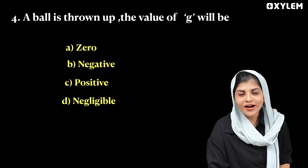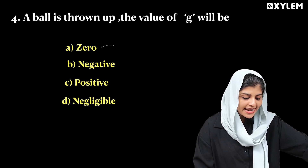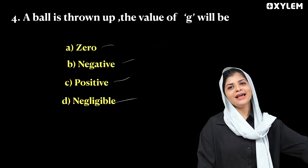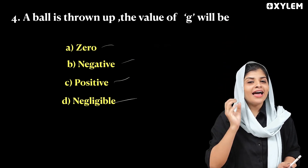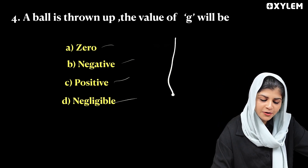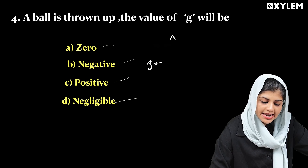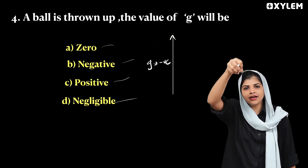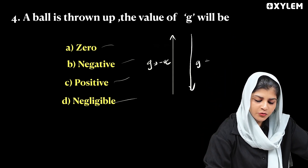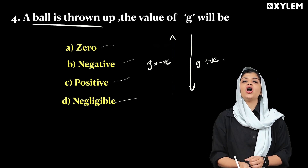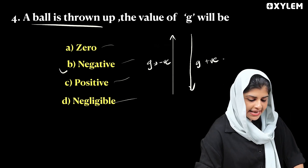Next question: A ball is thrown up — then the value of g will be? Options are: zero, negative, positive, negligible. When a ball is thrown up, gravity acts opposite to the motion, so g should be negative. Negative is the answer.